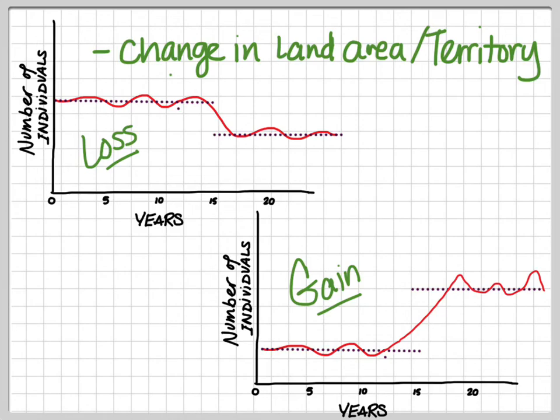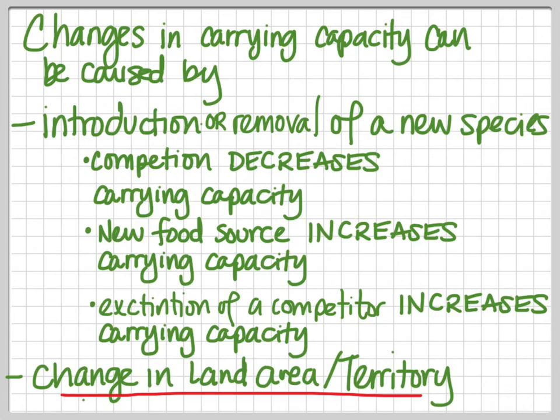A change in land area or territory for a species can significantly change their carrying capacity. In a species that loses territory — from natural disaster or development — you could see a reduction in carrying capacity. In a species that somehow gains land or territory, you very often will see an increase in the carrying capacity for that species. Changes in land area or territory available to a species can change the carrying capacity of the ecosystem for that species.